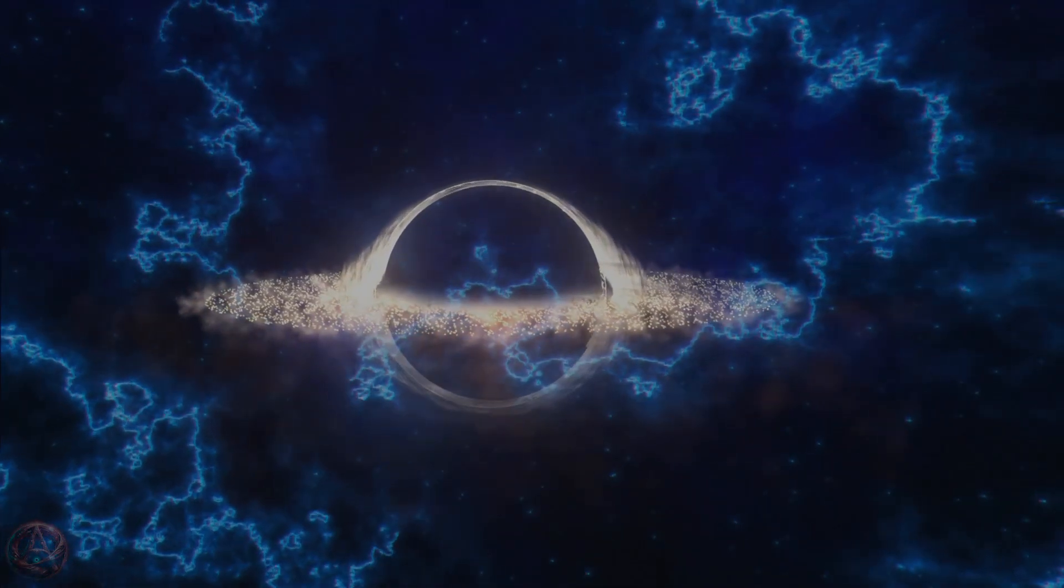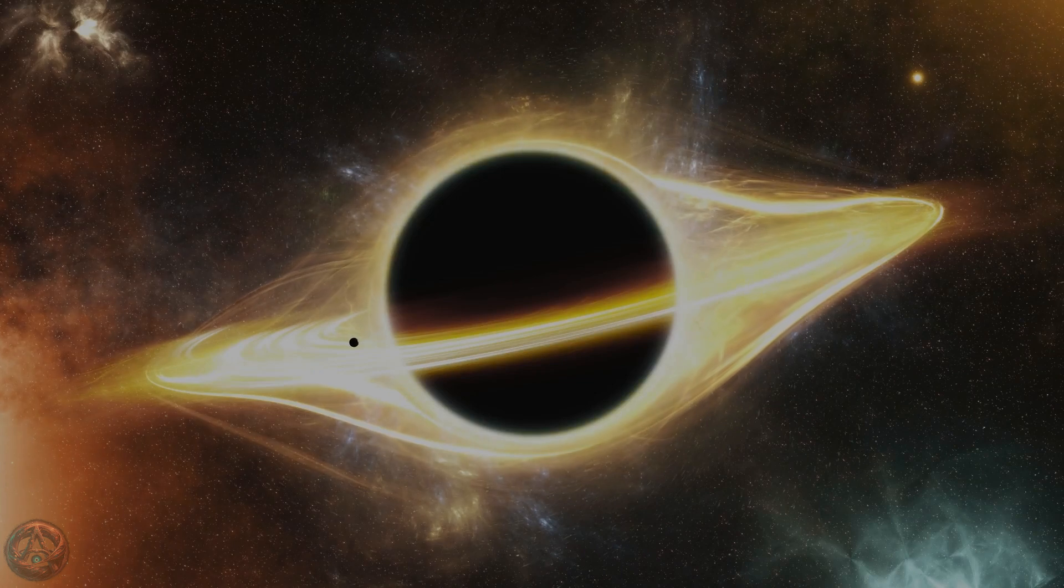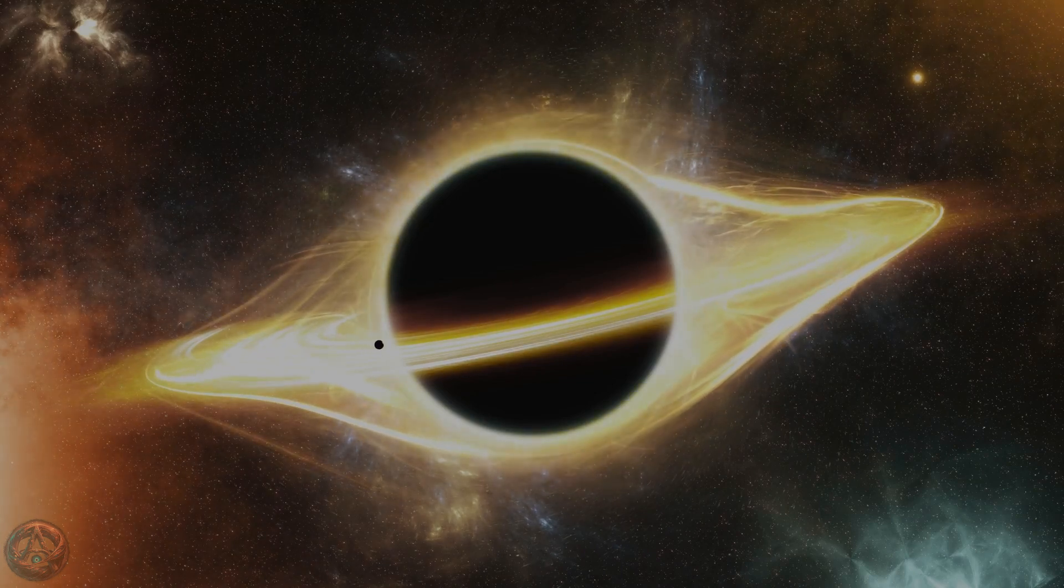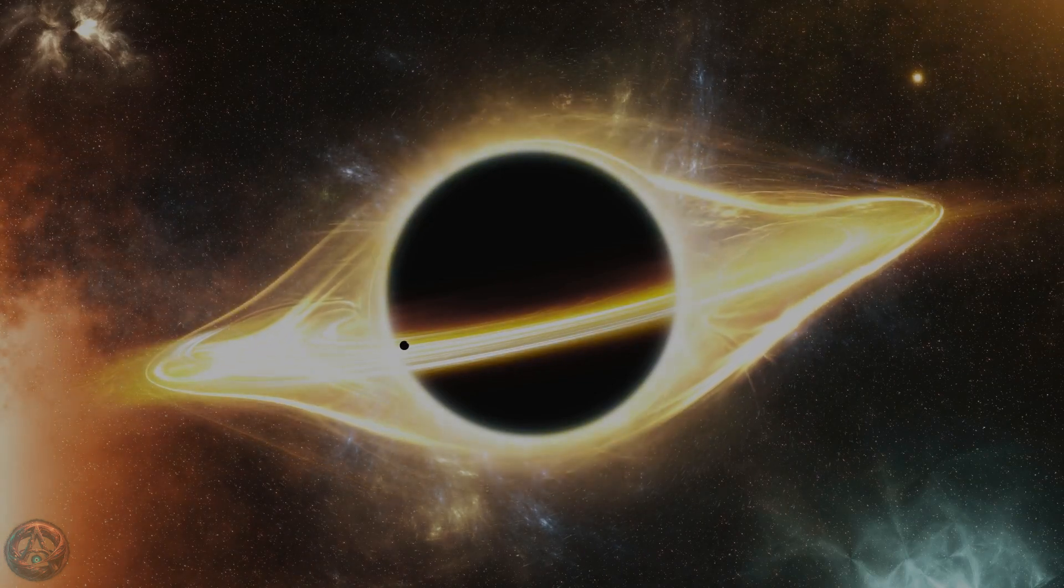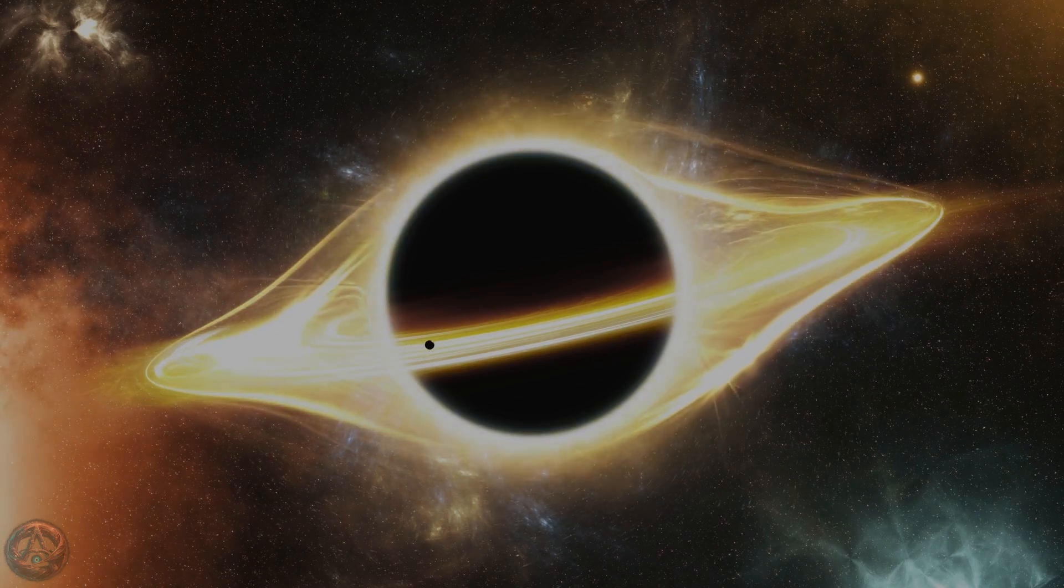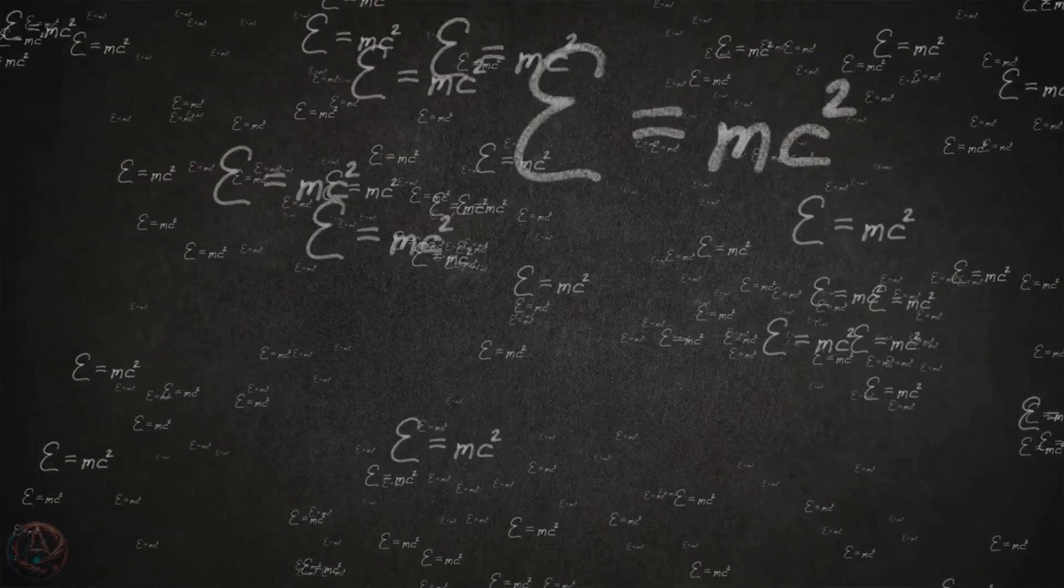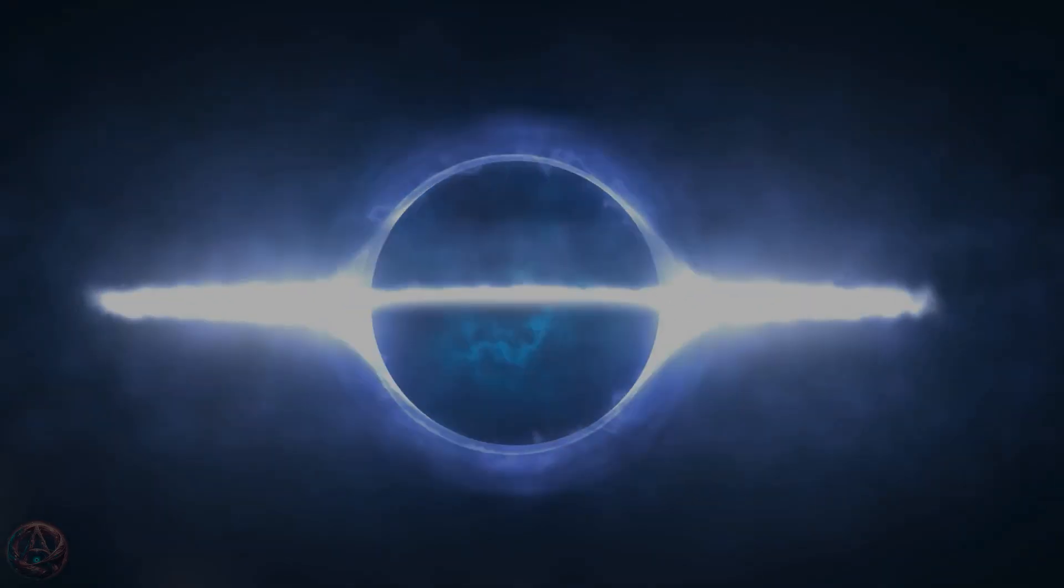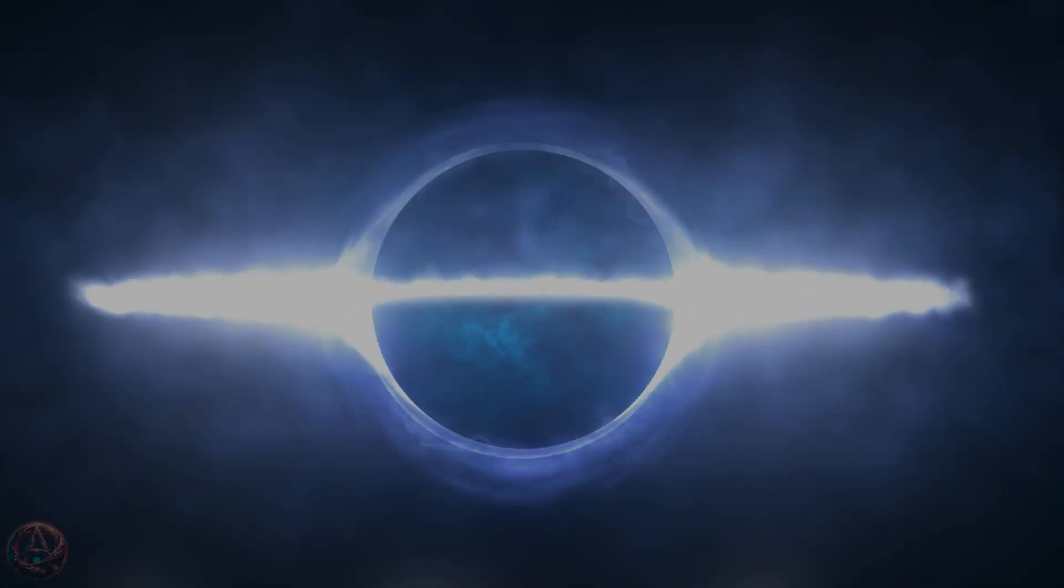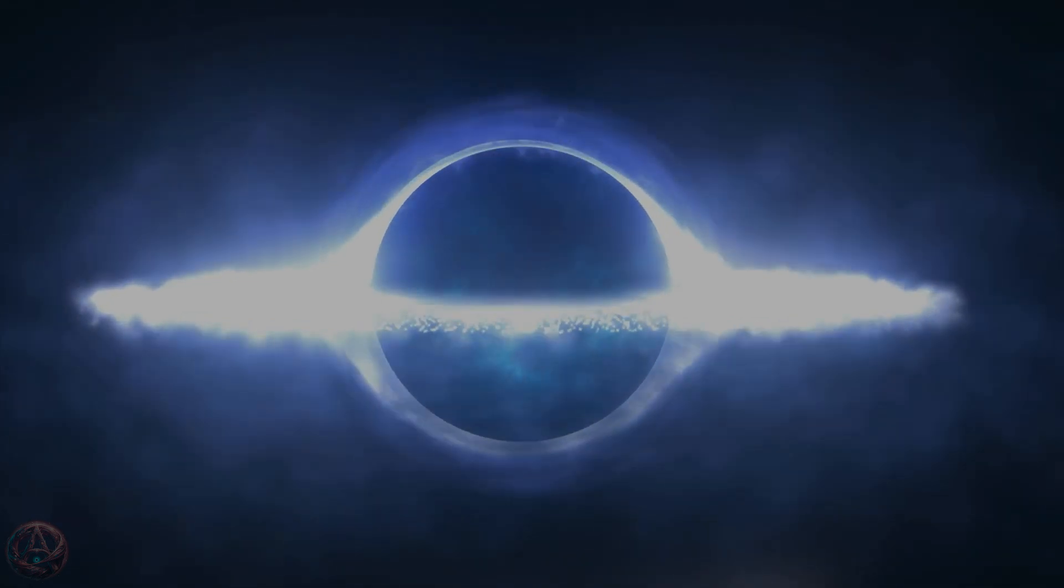For years, physicists struggled with this question. Stephen Hawking initially believed that information was truly lost, evaporating away as the black hole emitted radiation. But if that were true, it would mean our understanding of the universe was fundamentally broken. Then came a radical new idea. What if black holes don't destroy information at all but instead send it somewhere else? What if, rather than vanishing, everything that enters a black hole is translated into a different reality?